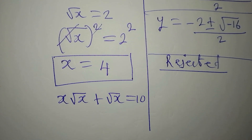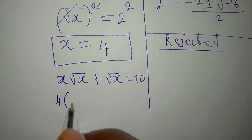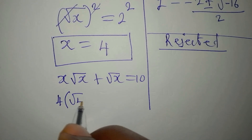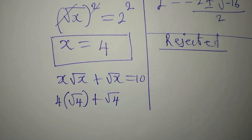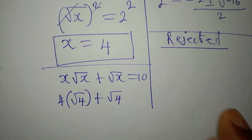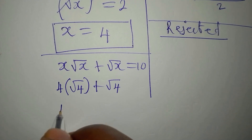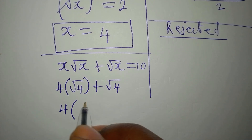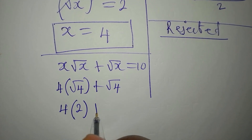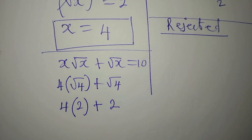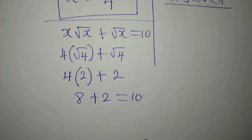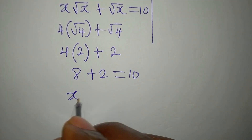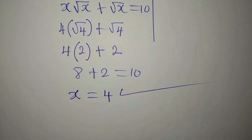Let's verify: substituting x equals 4 gives 4 times square root of 4, plus square root of 4. Square root of 4 is 2, so we have 4 times 2, plus 2, which is 8 plus 2, equals 10. Our answer x equals 4 is confirmed. Thank you for watching.